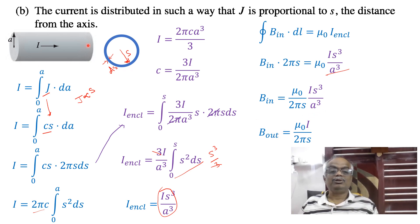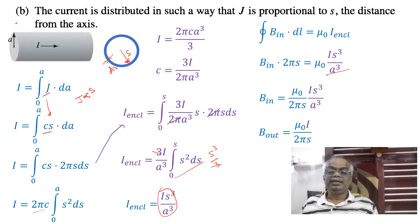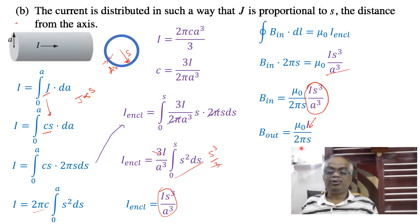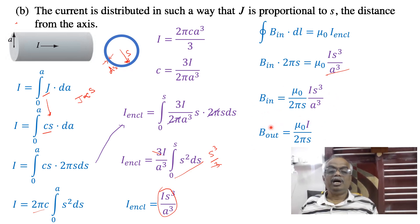For outside the wire where s > A, the enclosed current is simply the total current I. So Ampere's law gives B = μ₀I / 2πs, which is exactly what we got in Part A. This is the formula for the magnetic field inside, and this is the magnetic field outside. Thank you very much for watching.